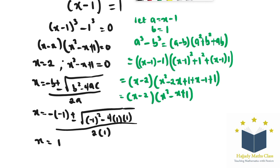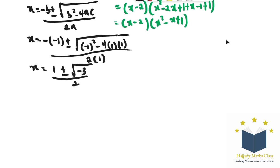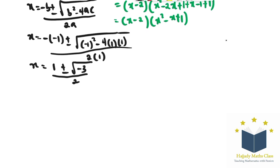So here I have my x to be equal to 1 plus or minus root negative 3 over 2. With this I'm going to have x equals 1 plus or minus the square root of negative 3, which is the same thing as root 3i, which is a complex value, over 2.